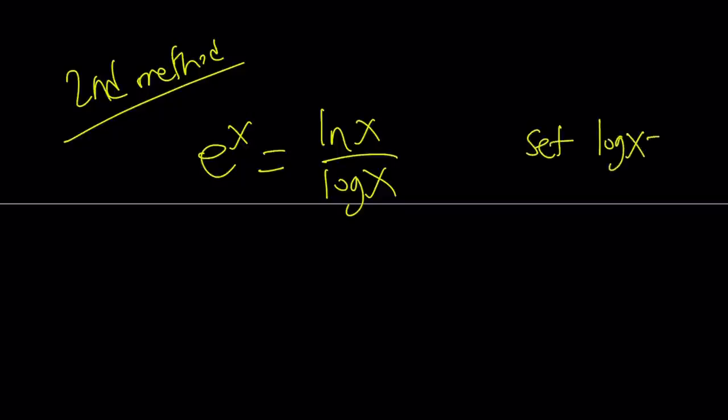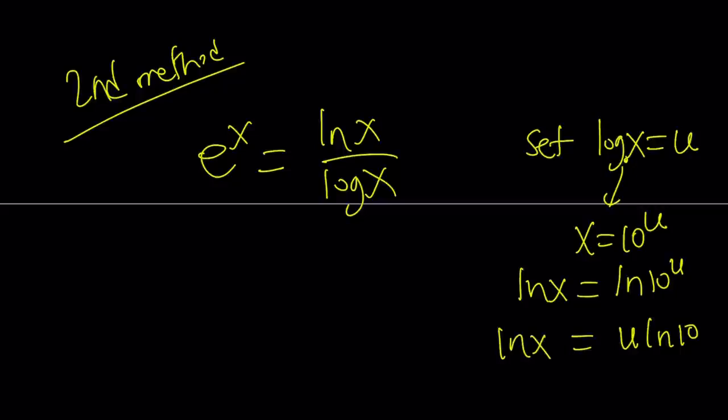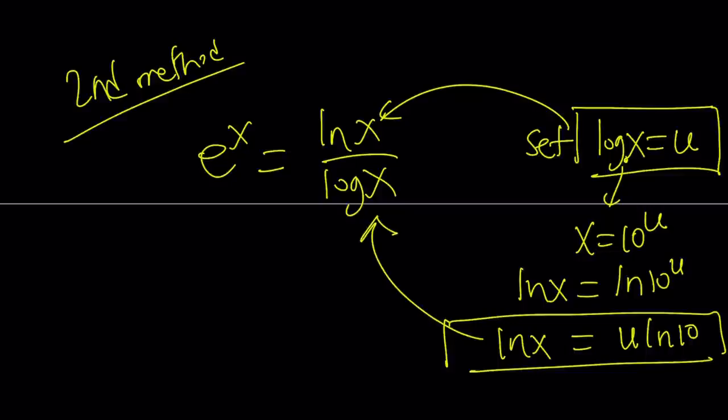So, let's go ahead and talk about the second method. The second method involves the following. We have e to the power x equals ln x over log x. Let's go ahead and set log x equal to u. Now, this means x, because the base is 10, by using definition of logs, x becomes 10 to the power u, and ln x becomes ln 10 to the power u, which is u ln 10. So, ln x is u ln 10, and log x is u. So, why don't u substitute? Okay.